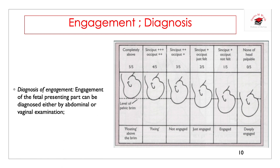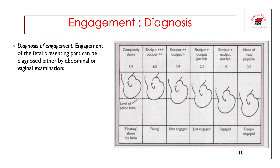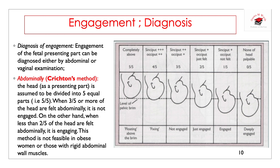Diagnosis of engagement of the fetal presenting part can be made either by abdominal or vaginal method. Abdominally, a method called the Christian method is used: the head is assumed to be divided into five equal parts. When three-fifths or more are felt abdominally, it is not engaged. When less than two-fifths of the head are felt abdominally, it is engaged. This method is not feasible in obese women or those with a rigid abdominal wall.